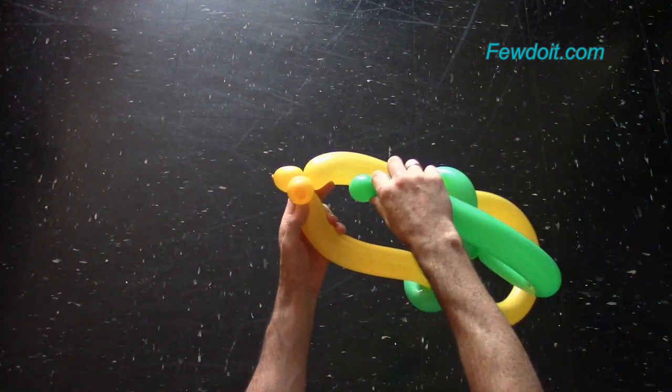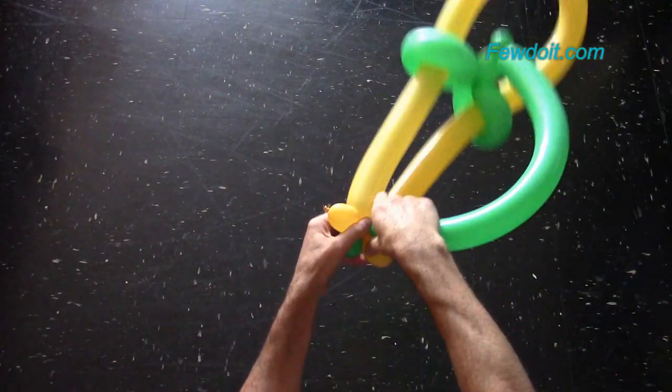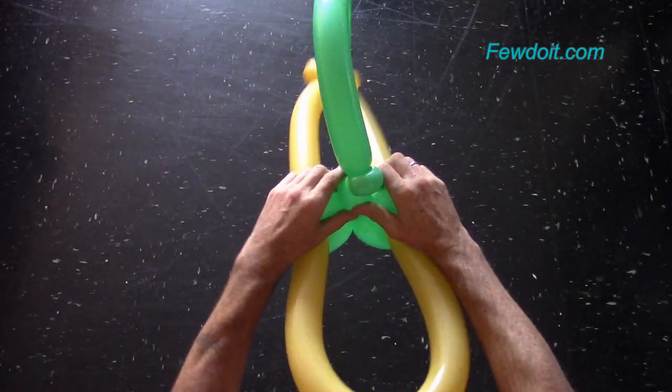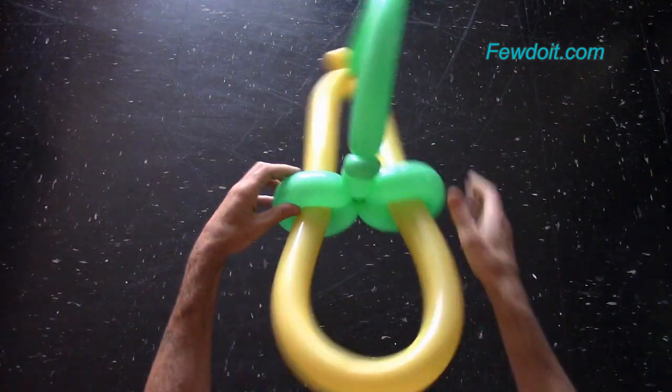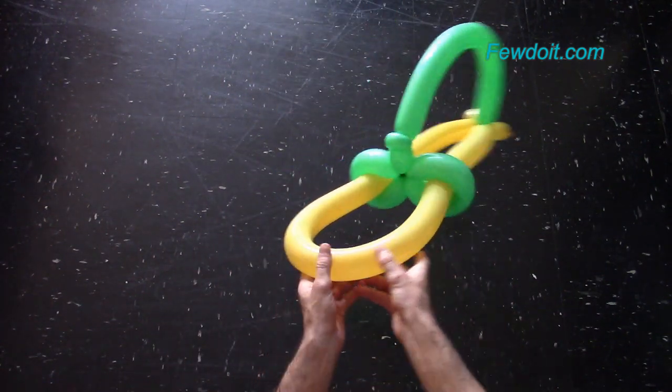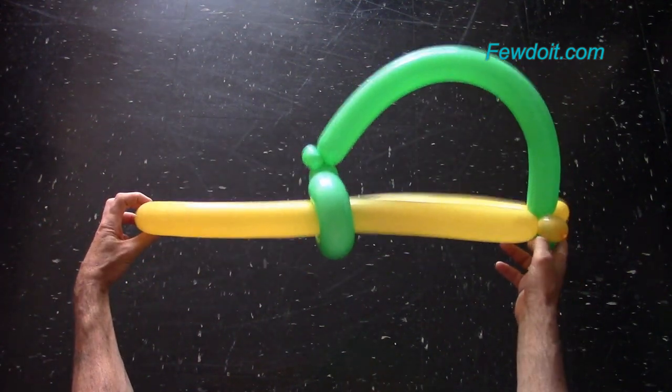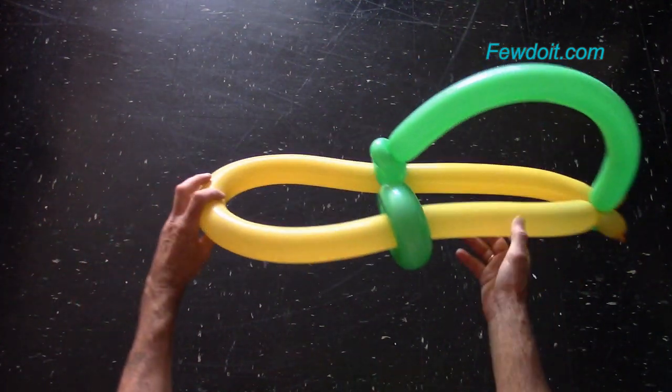Twist about 3 cm long bubble at the end of the green balloon. Attach the small last green bubble between the last yellow bubbles. We have already made the baseball balloon cap. Here is the bottom view, the side view and the front view.